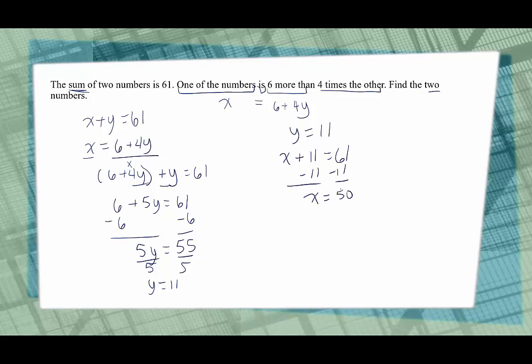So we have x is equal to 50 and y is equal to 11, and again we can check our work by plugging in 11 into that second equation for y and seeing if we really do get 50. Let's see, does 50 or x really equal 6 plus 4 times 11? Well 4 times 11 is 44 and 6 plus 44 does equal 50, so I feel pretty confident that those are the two numbers in this particular problem: 11 and 50.